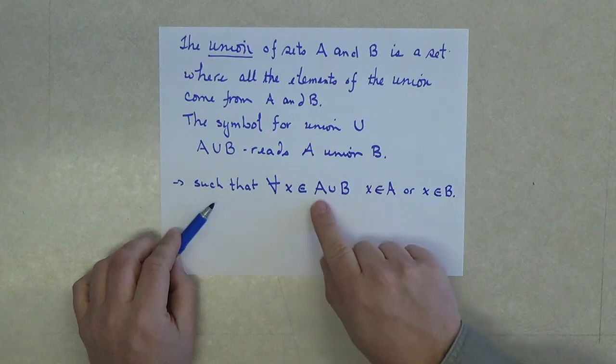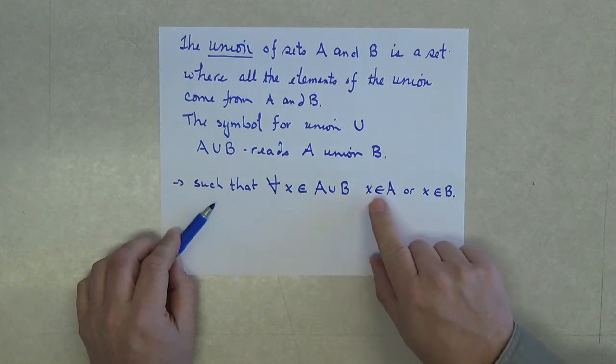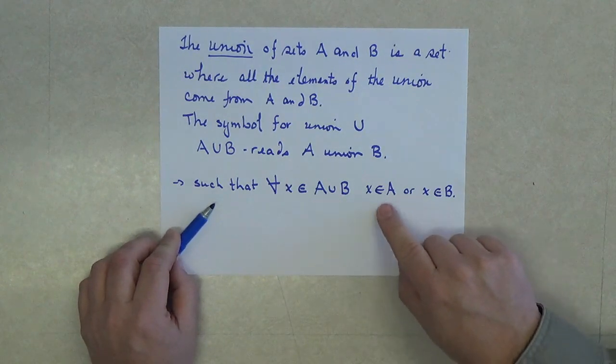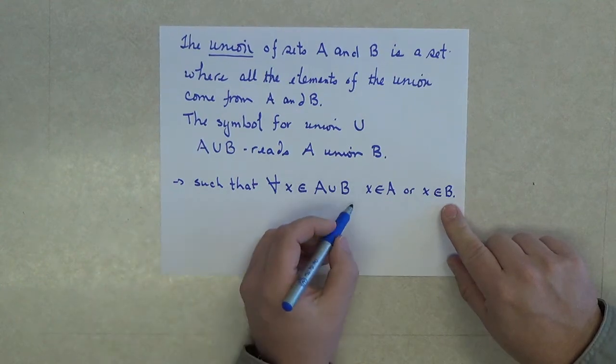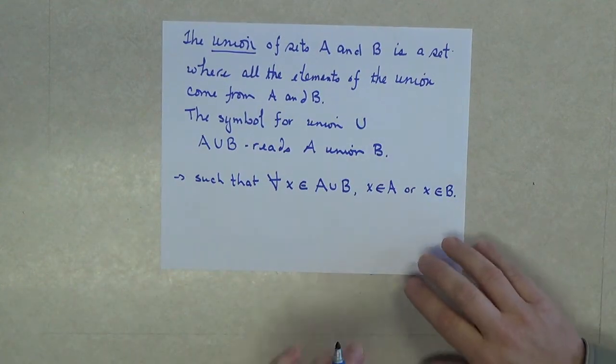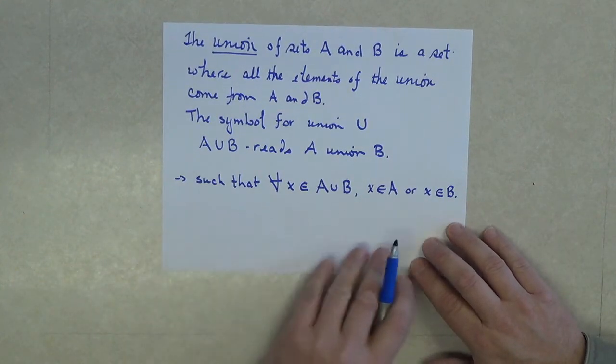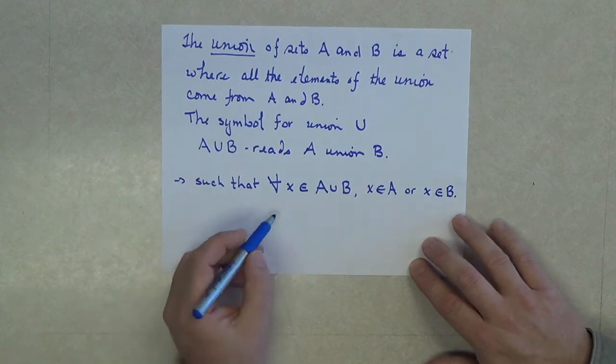Such that for all x, an element of the union, x was an element of A or x is an element of B. What does this mean? I'm about to give you a very practical example.